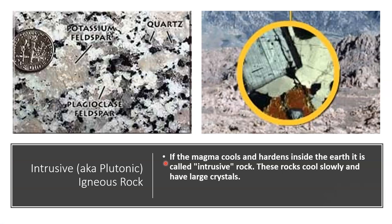Looking at intrusive or plutonic igneous rocks, in a hand specimen you'd actually be able to see the crystals. In this photograph you can see potassium feldspar, plagioclase feldspar, and quartz in relationship to the size of a dime. Under the microscope, the crystals get even larger. Intrusive igneous rocks form underground in plutons, so we also call them plutonic igneous rocks.